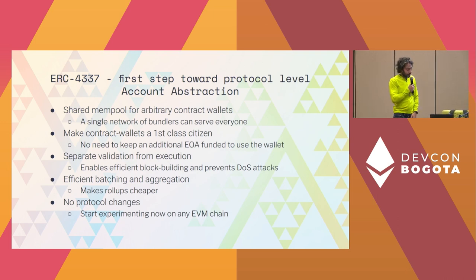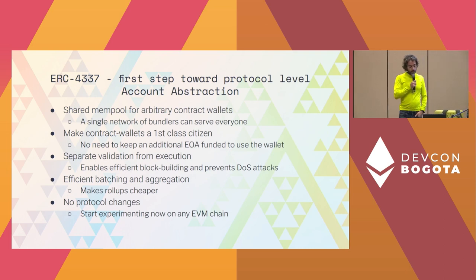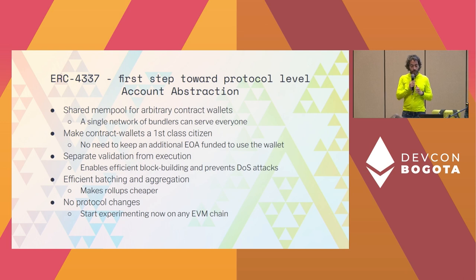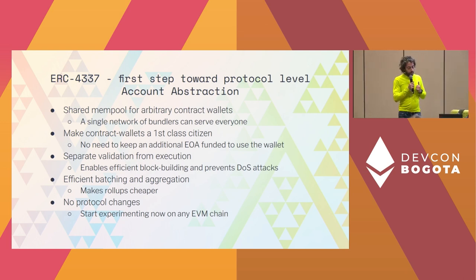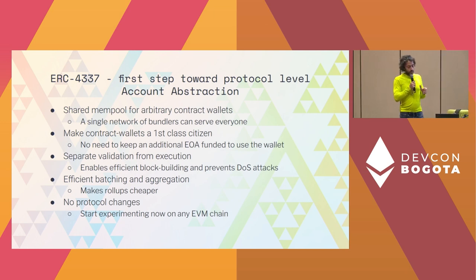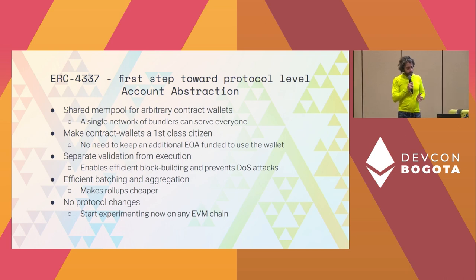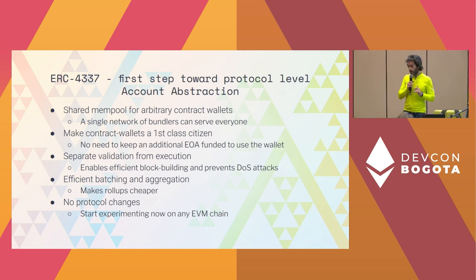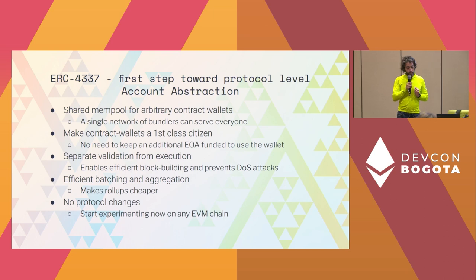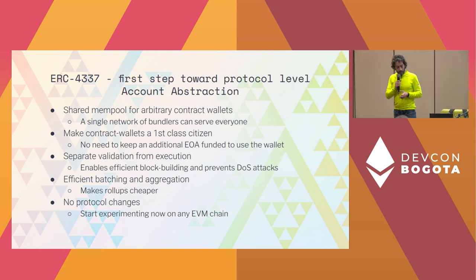The way we're doing it: we essentially create a new type of mempool for anyone that wants to participate. This mempool accepts something we're calling a user operation — essentially a transaction but one that works with account contracts. That makes contract wallets a first-class citizen and totally does away with the need for having an EOA. You don't need an EOA to control this account.